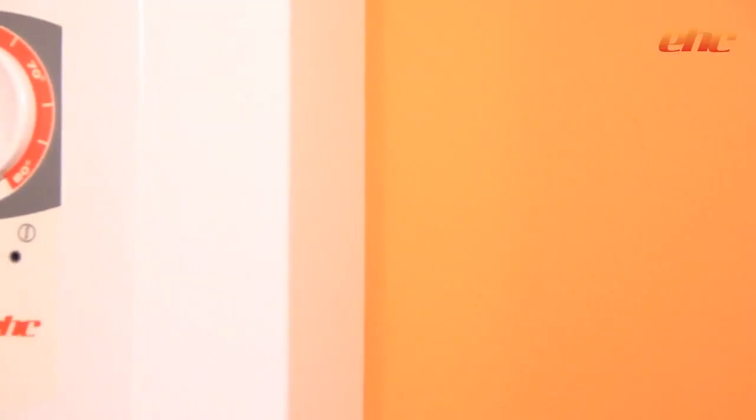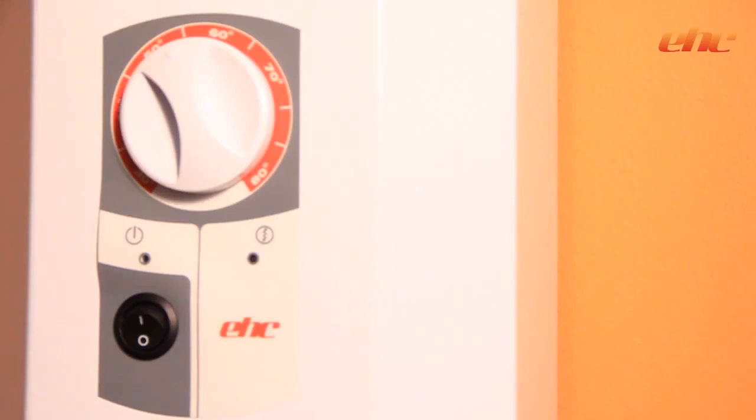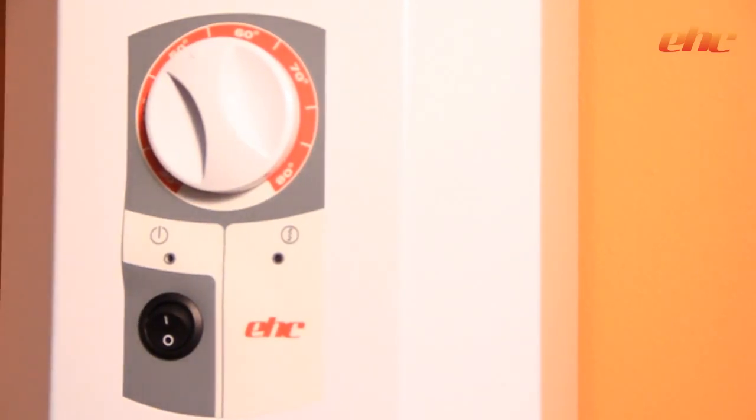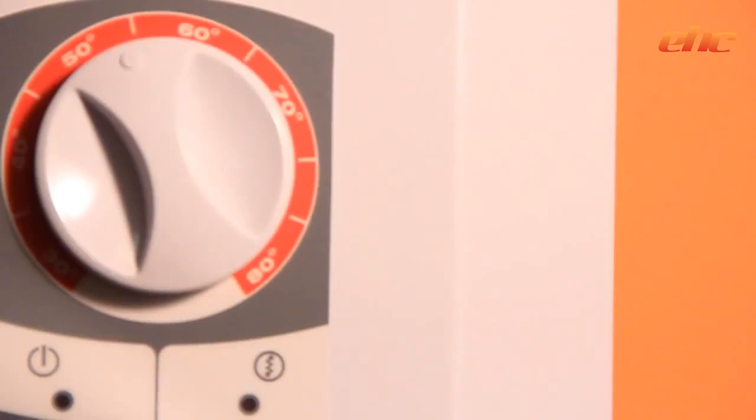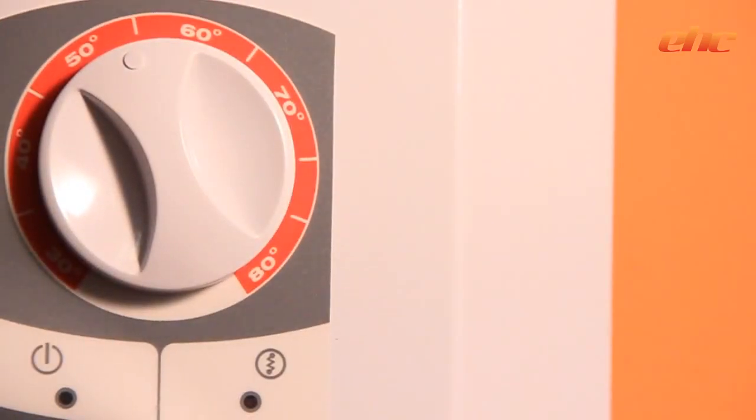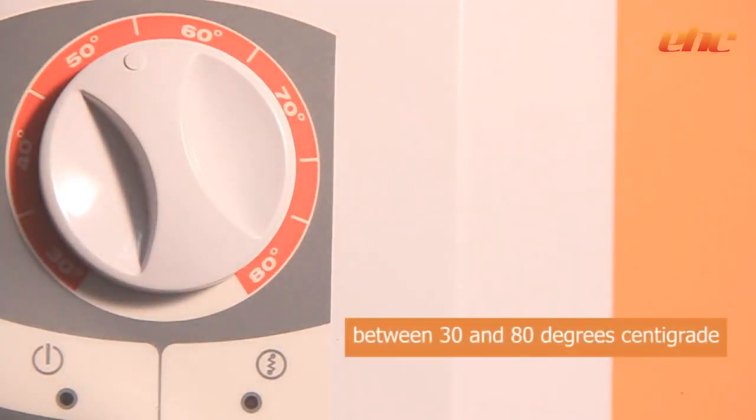This slim designed boiler has an easy to use temperature control selector and on-off switch. The heat mode and fault finding indicators will assist the installer at commissioning stage. The boiler temperature can be adjusted between 30 and 80 degrees centigrade dependent on the system requirements.